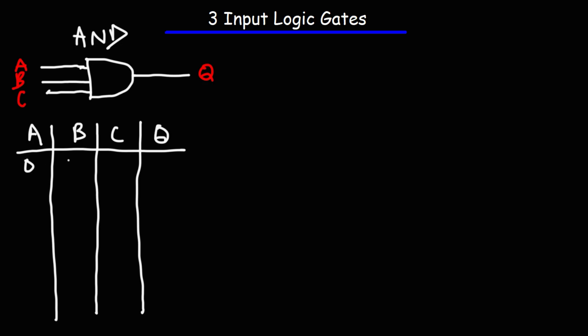First let's write up the three different input possibilities. It could be 000, 001, 010, 011, and so forth.